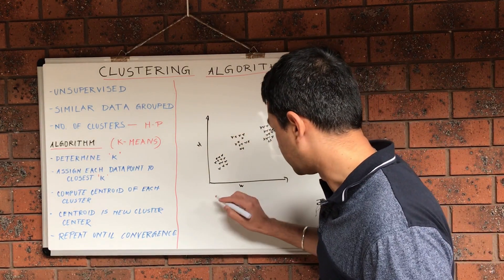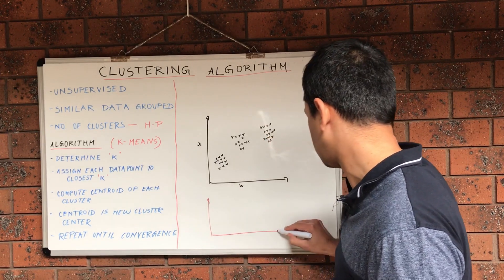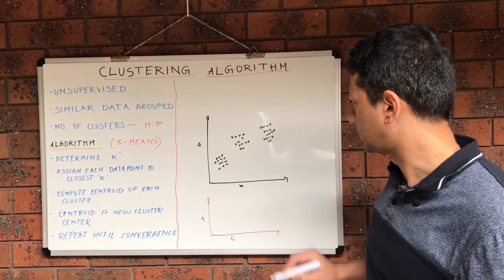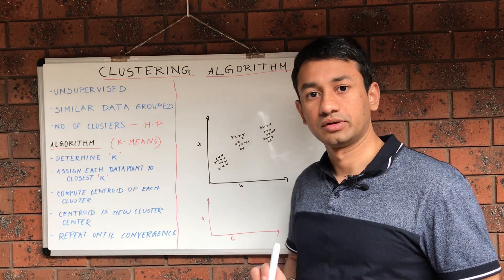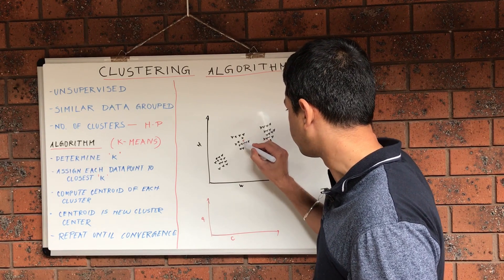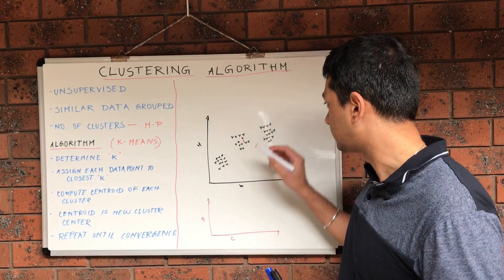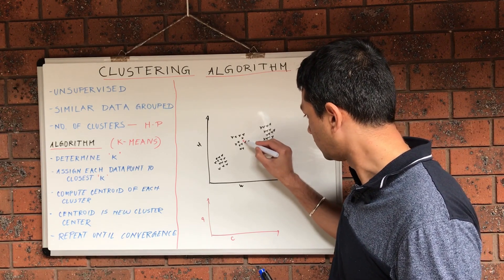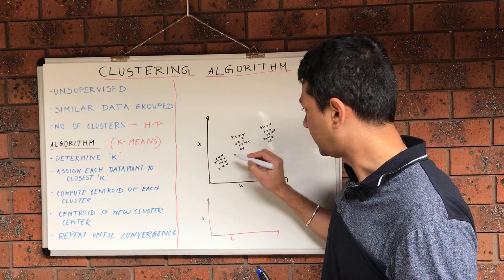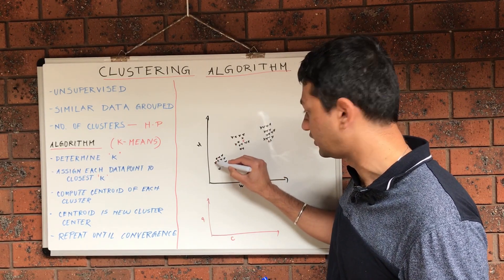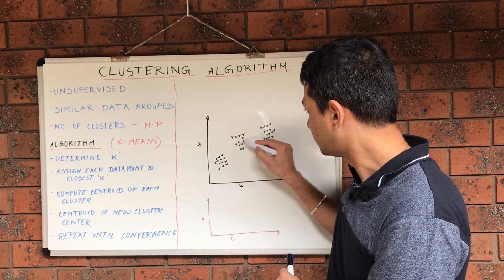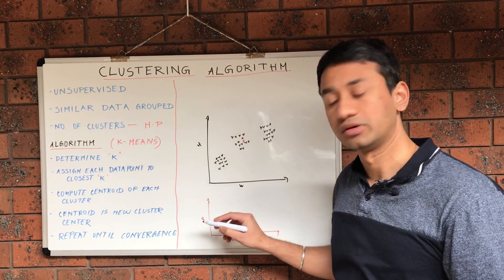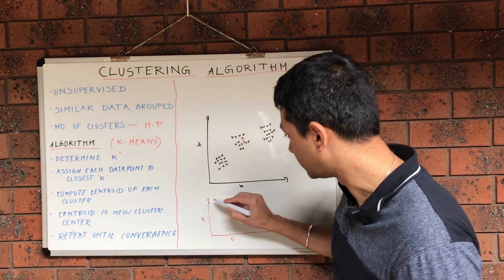The plot for the elbow method would look something like this, where the y-axis is the distortion and the x-axis is the number of clusters. For this particular dataset, let's say we have only one cluster. Our centroid would be located somewhere here. The centroid is the center point for this particular dataset. In order to calculate the distortion, we identify the distance of each and every single data point to the centroid, and the summation of all those distances is the total distortion. When we have only one cluster, the distortion would generally be very high.